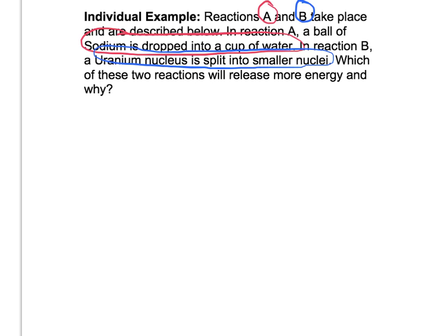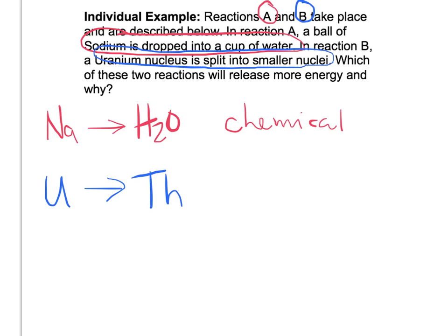First we need to figure out what type of reaction they are. Dropping sodium into water, that is a chemical reaction. Uranium, splitting into something smaller, probably something like thorium, is a nuclear reaction.